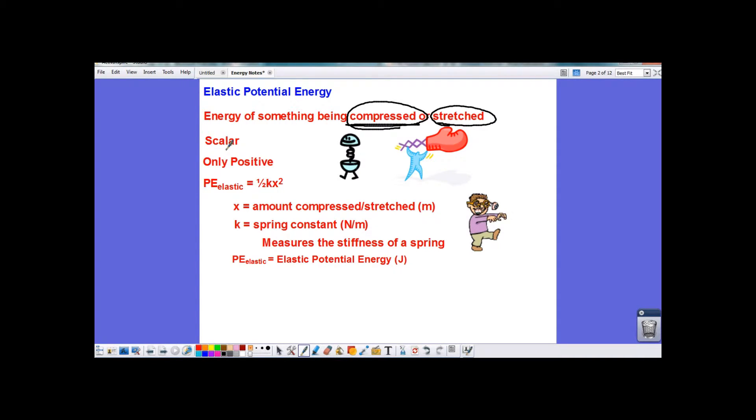The elastic potential energy is a scalar, which means it does not have a direction associated with it. Another thing is it is only positive, okay? We could have positive or negative work, but we can only have positive elastic potential energy. So, how much elastic potential energy do you have? Well, the equation is the elastic potential energy is equal to one-half k times x squared.